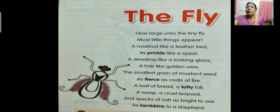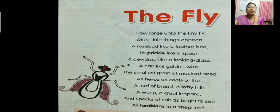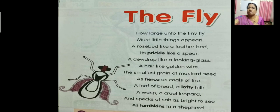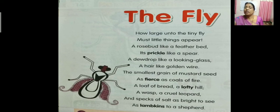Now, a question for you all. We have read the poem The Fly, written by Walter de la Mare. Previously, what is the other poem we read? Yes — the Silver poem, also written by Walter de la Mare. So both poems are written by Walter de la Mare. In these two poems, what is similar and what is different — what are the similarities and differences?